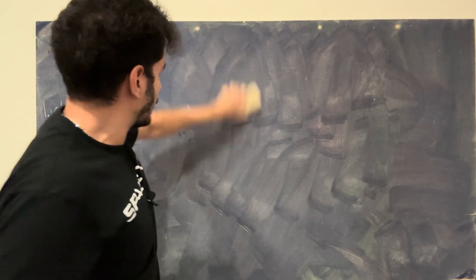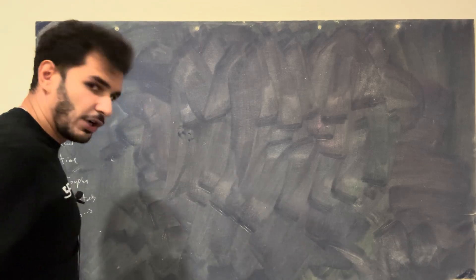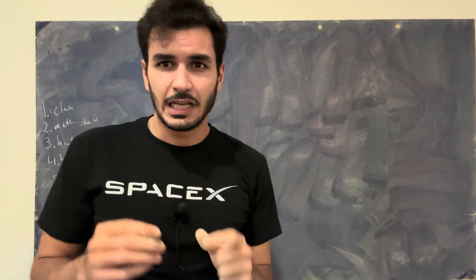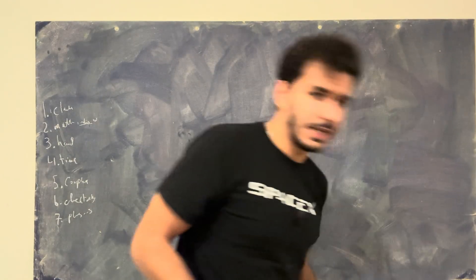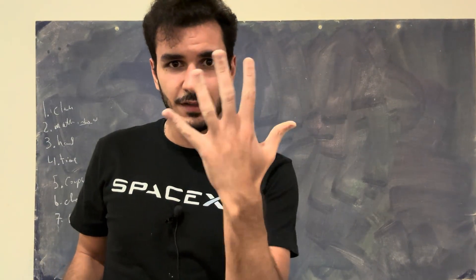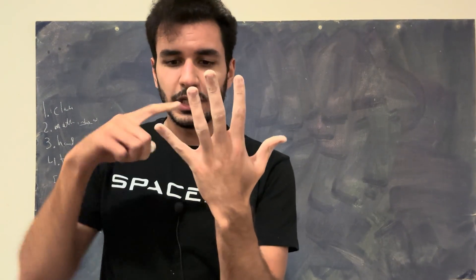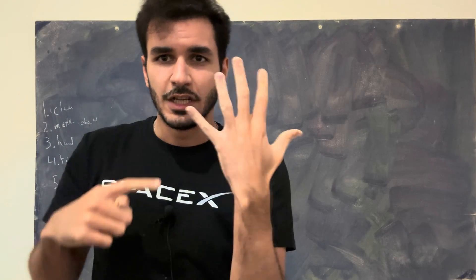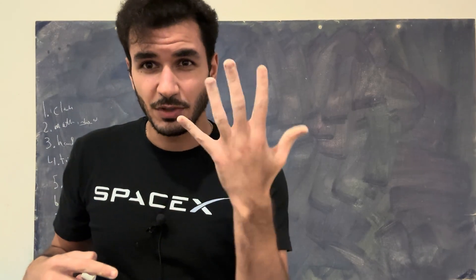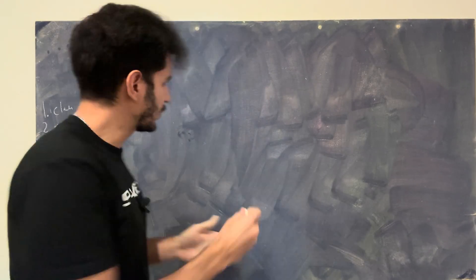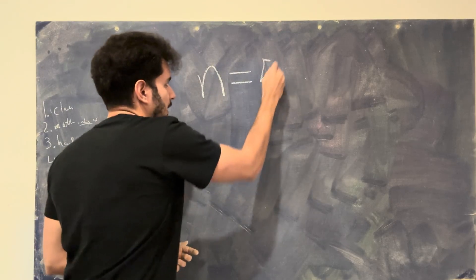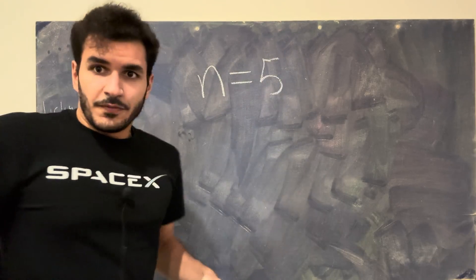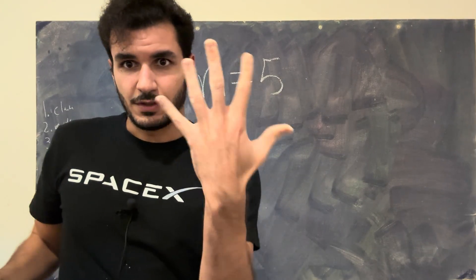Before I talk about complex numbers, let's talk about normal numbers — quote, real numbers. I'm going to use a very simple example, which is my hand. I have a hand here with five fingers, and you can count one, two, three, four, five. So we're going to assign the number five to the number of fingers I have — n equals five. That's a real number. There's a physical quantity that you can see.